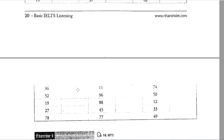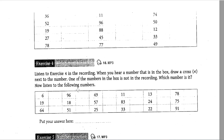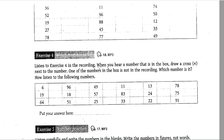Exercise 4: Which number is it? Listen to exercise 4 on the tape. When you hear a number that is in the box, draw a cross next to it. One of the numbers in the box is not on the tape — which number is it? Now listen: 6, 96, 49, 11, 13, 76, 19, 18, 57, 83, 24, 75, 65, 64, 51, 25, 33, 22, 91.